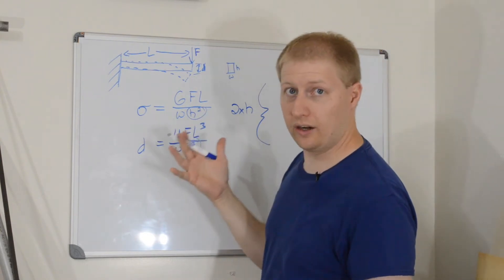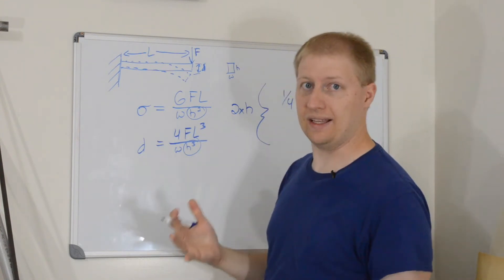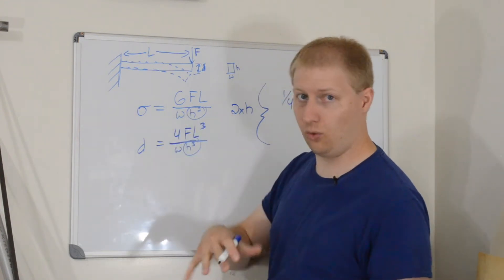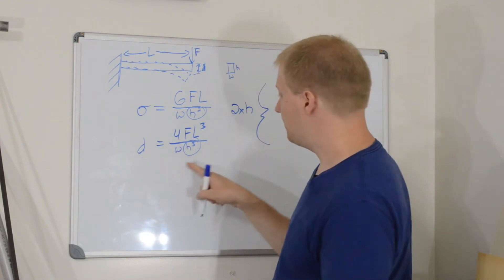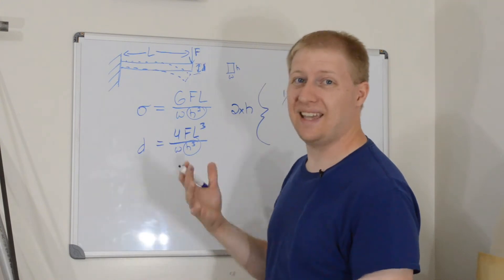So, 2 squared is 4, so it's going to be 1 fourth, 1 fourth the stress that it would be before. The deflection is going to be h cubed, so it's 2 times 2 times 2, that's 8.